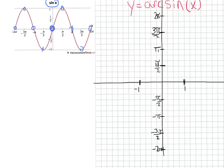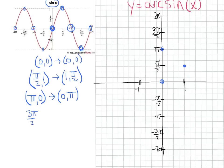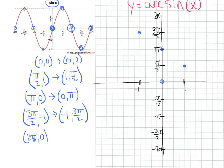Starting at the origin: the point (0,0) — its inverse is (0,0), so we still go through the origin. Working in the positive direction: (π/2, 1) has inverse (1, π/2), so we go right 1 and up π/2. The point (π, 0) has inverse (0, π). The point (3π/2, −1) has inverse (−1, 3π/2), so we go left 1 and up 3π/2. And (2π, 0) has inverse (0, 2π).